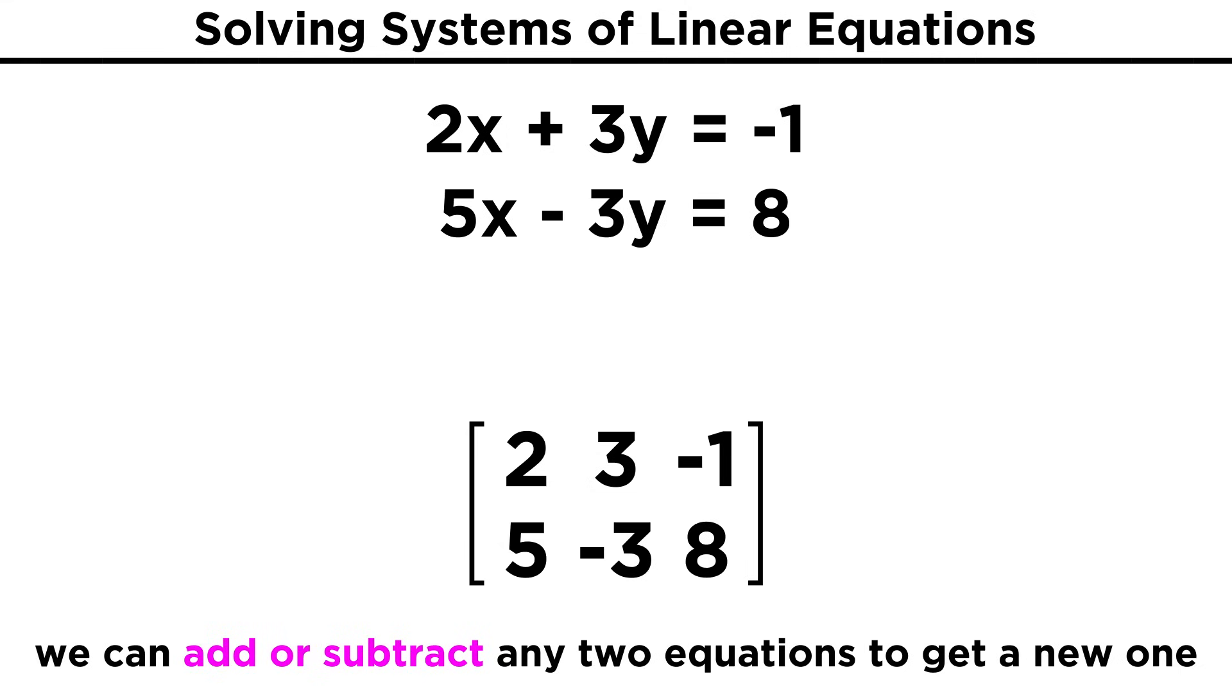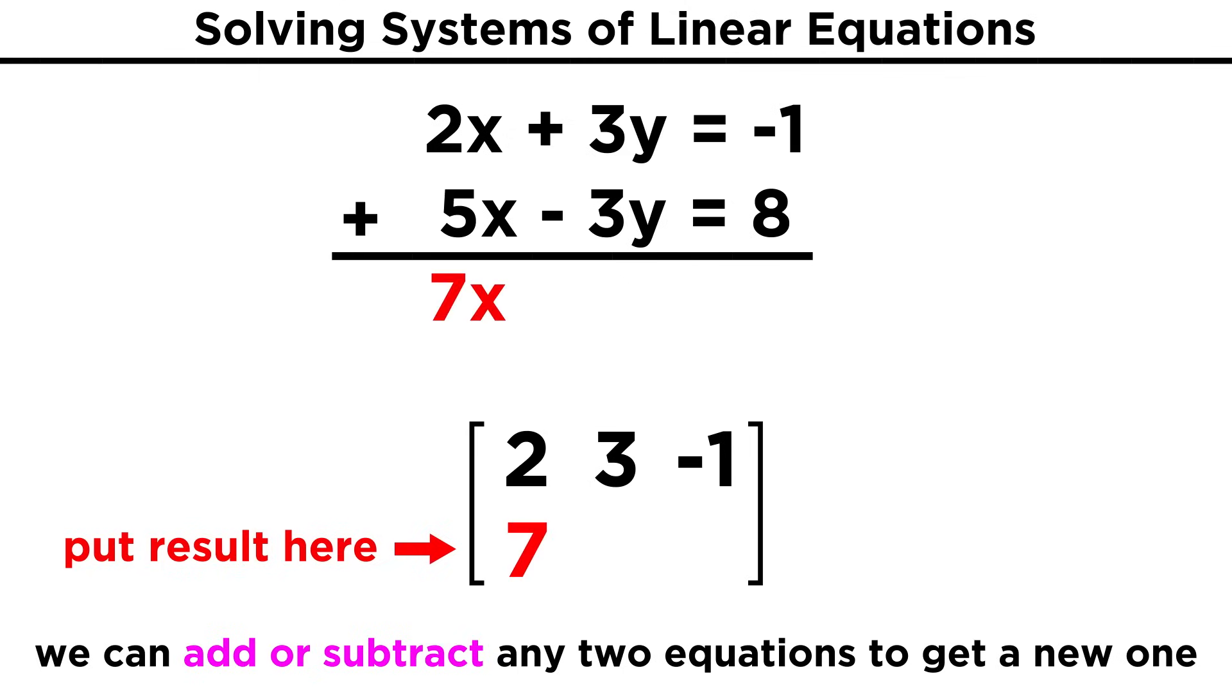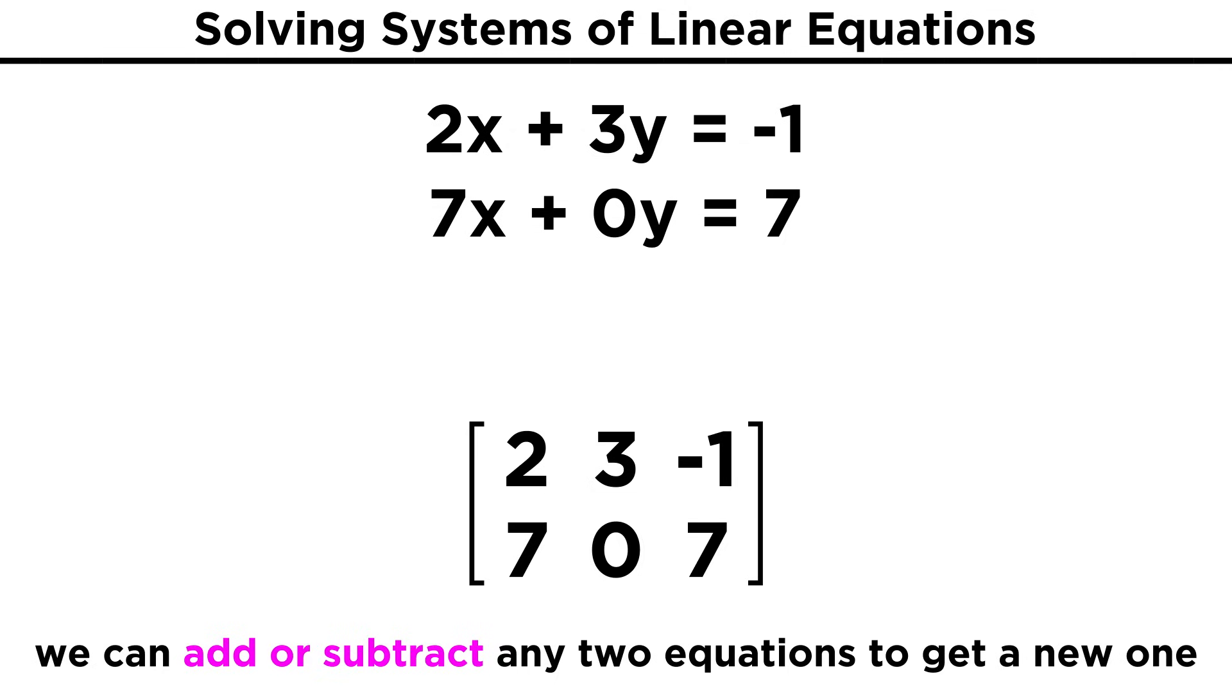We can take any two equations in the system and add or subtract them to produce another valid equation that will be part of the system. This is another technique we learned in algebra. Now with the matrix, we want to retain the dimensions of the matrix, so let's say we decide that we want to add the two rows together, let's do so and replace the second row with our result. We can achieve this by adding the values in the first row to the values in the second row below. To 5 we add 2 and get 7. To -3 we add 3 and get 0. To 8 we add -1 and get 7. So to summarize, we can add or subtract any two rows to generate a new row without affecting the solution to the system.